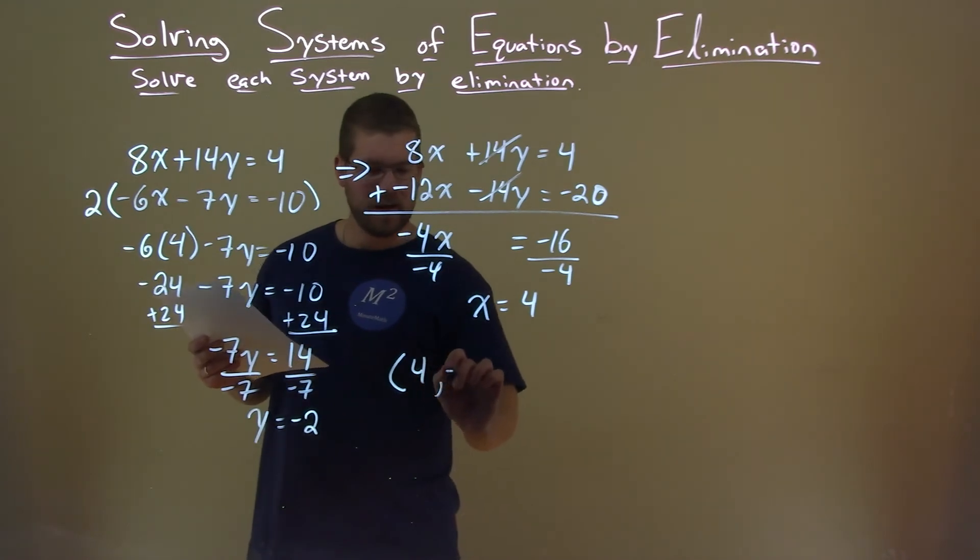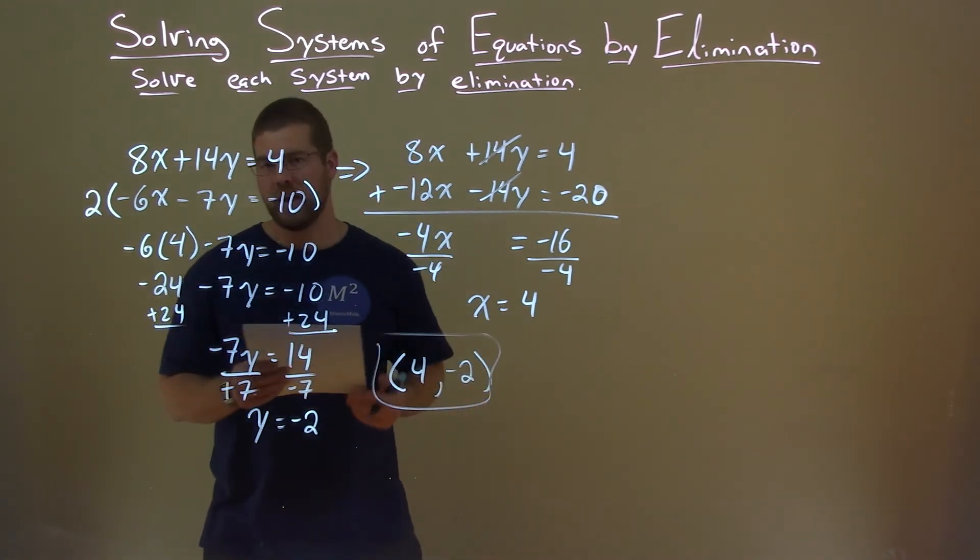14 divided by negative 7 is negative 2. So we have our values: x is 4, y is negative 2. And there is our final answer.